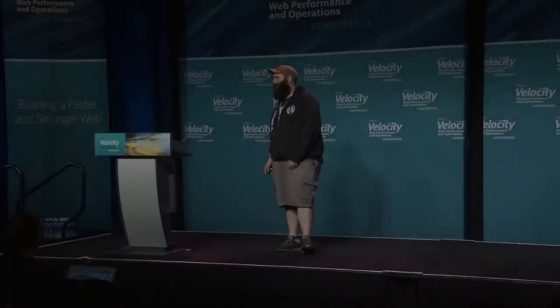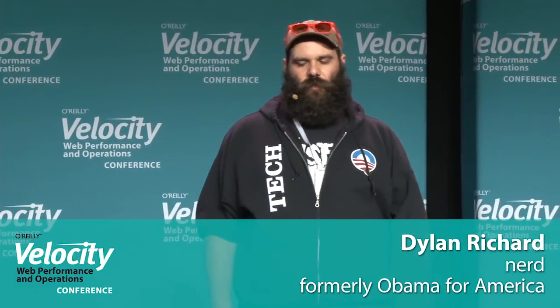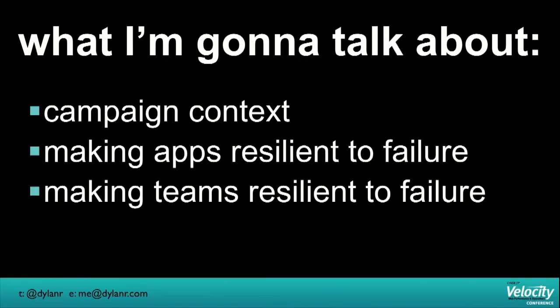Hi, everyone. I'm Dylan Richard. I was the director of engineering for Obama for America, which is the 2012 re-election campaign. Today, I'm going to give you a little bit of context about what the campaign was and why we were there and how it all worked, talk a little bit about making apps resilient to failure and talk a little bit about making teams resilient to failure. This is kind of short, so find me later and we'll talk more.